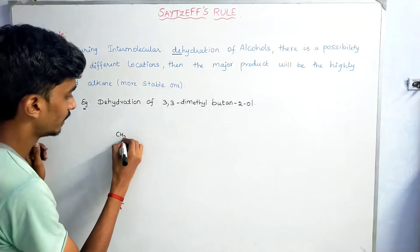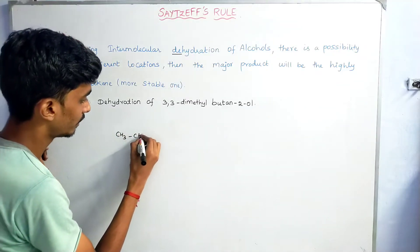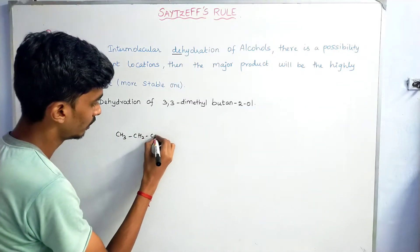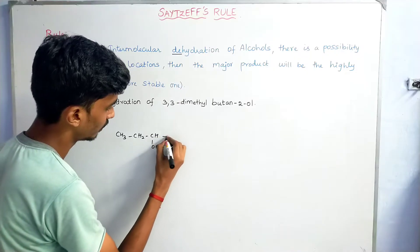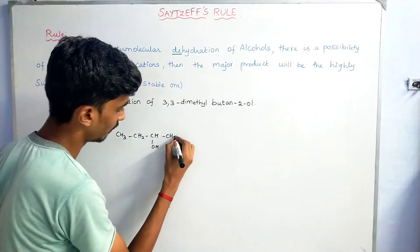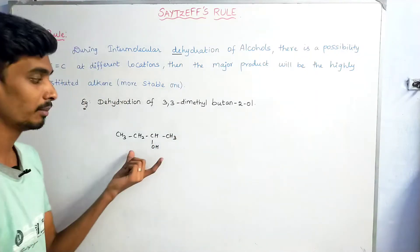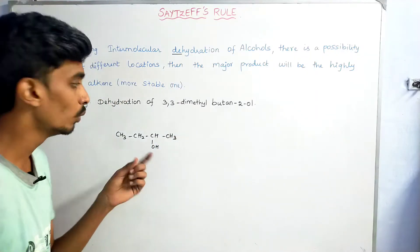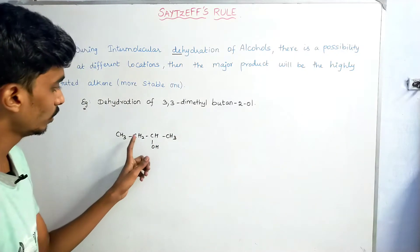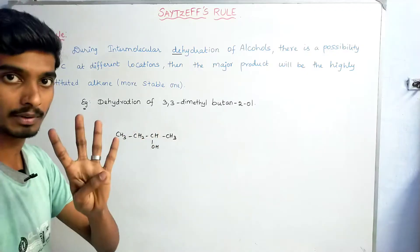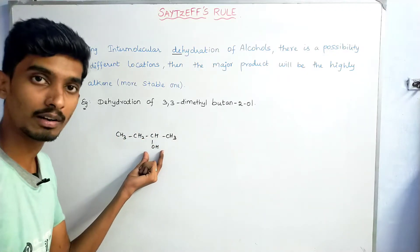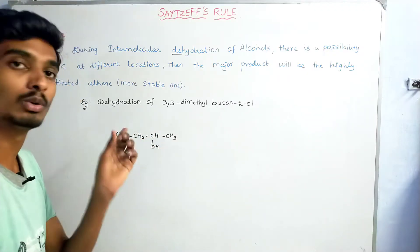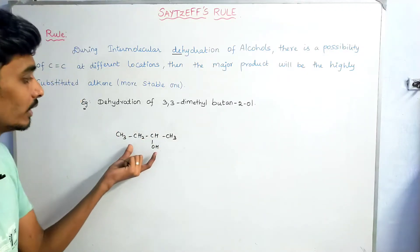For example, take CH3–CH2–CH–CH3. This is butane-2-ol — there are 4 carbons, and the alcohol group is at the 2nd position, so it is butane-2-ol. This is an elimination reaction, which means dehydration.